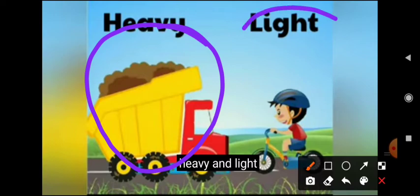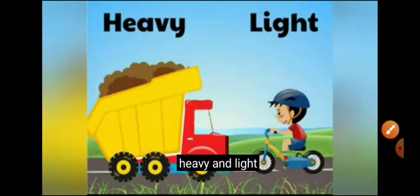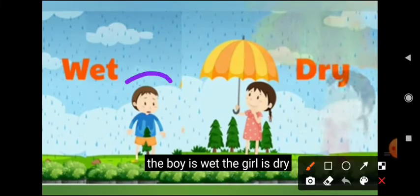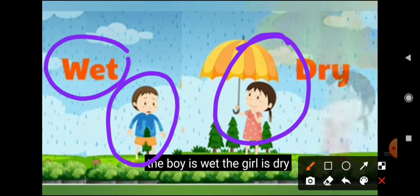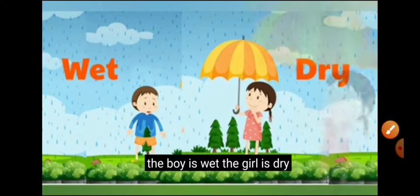And the bicycle is very light. Heavy, light — so children, the opposite word of heavy is light. Here we can see the boy is wet, and here the girl is dry. Wet, dry — the opposite word of wet is dry.